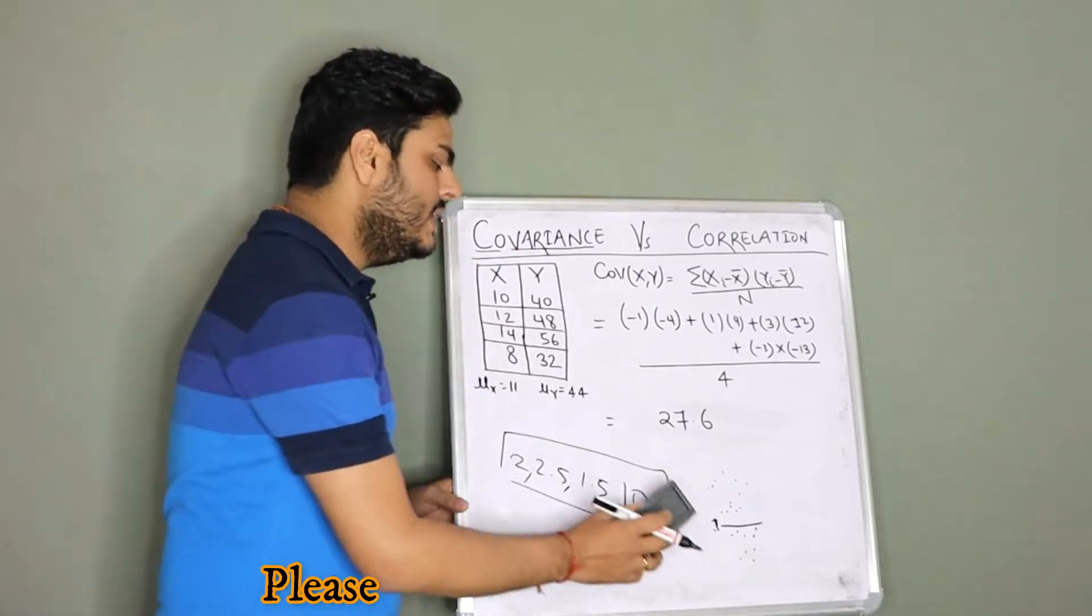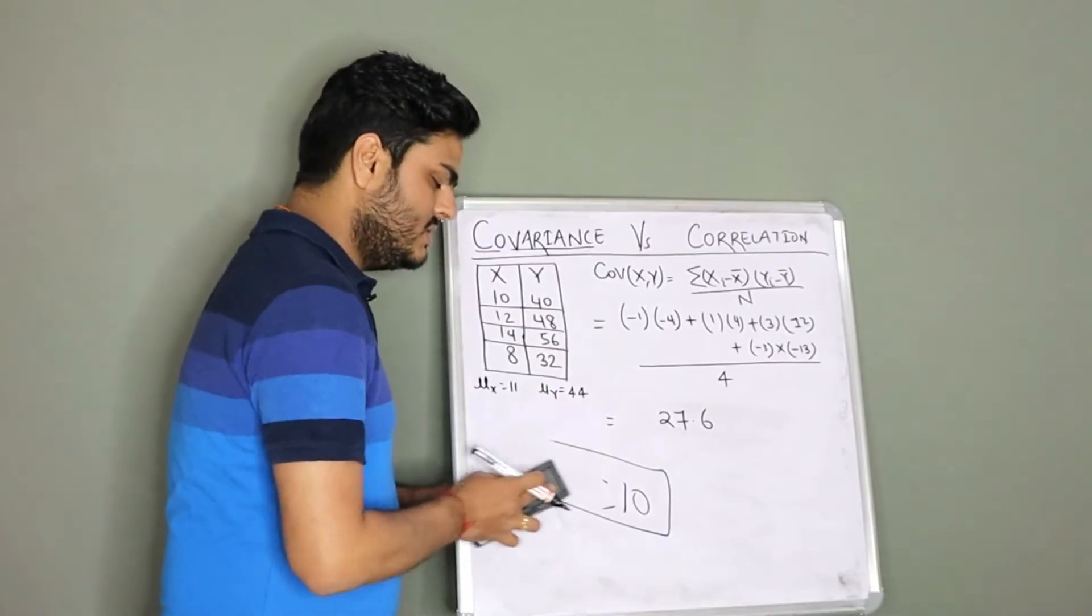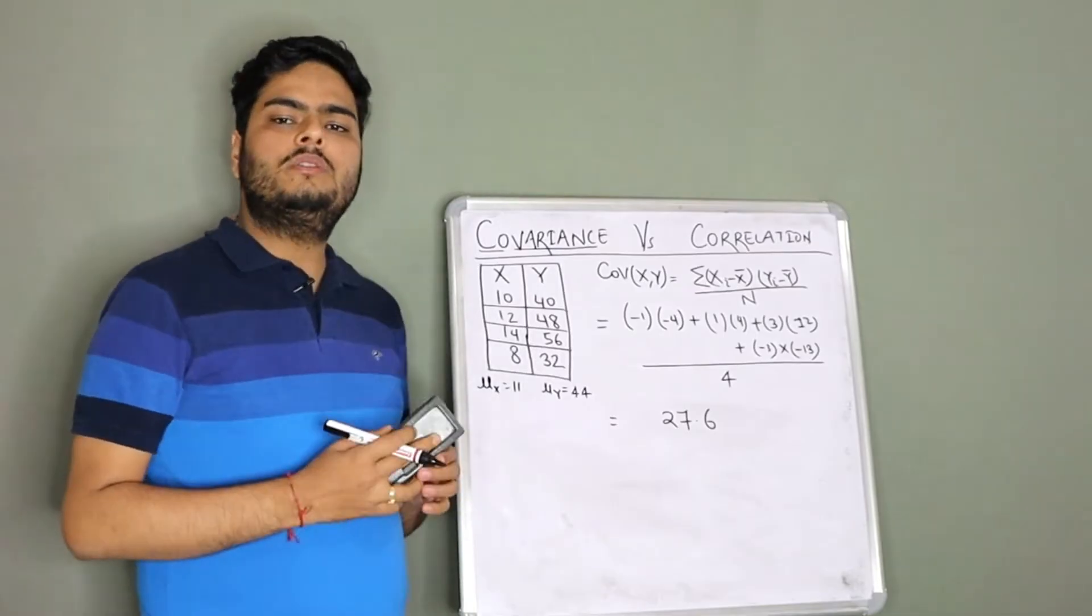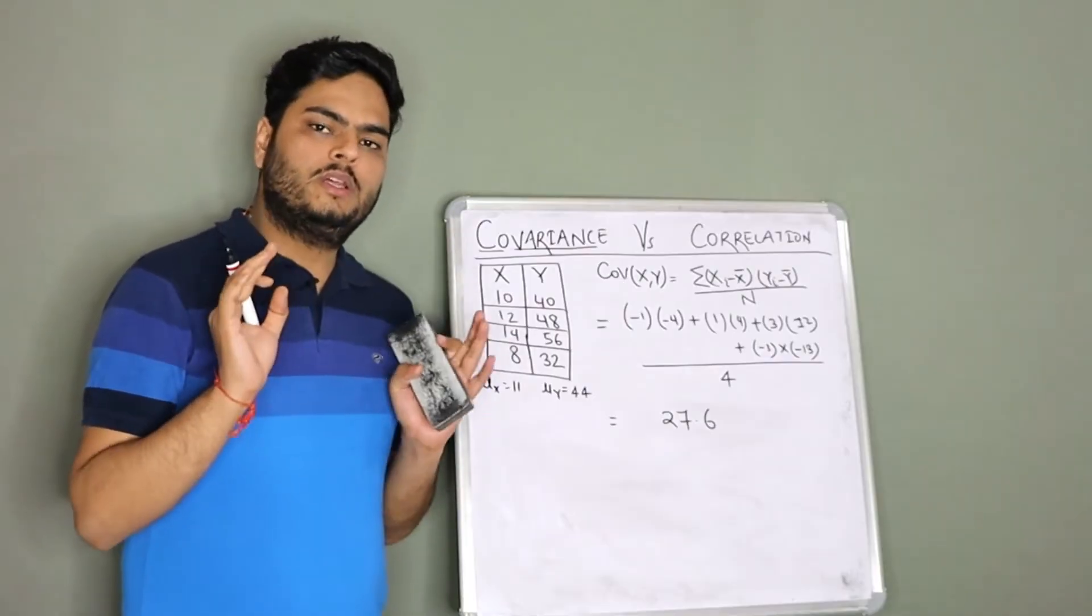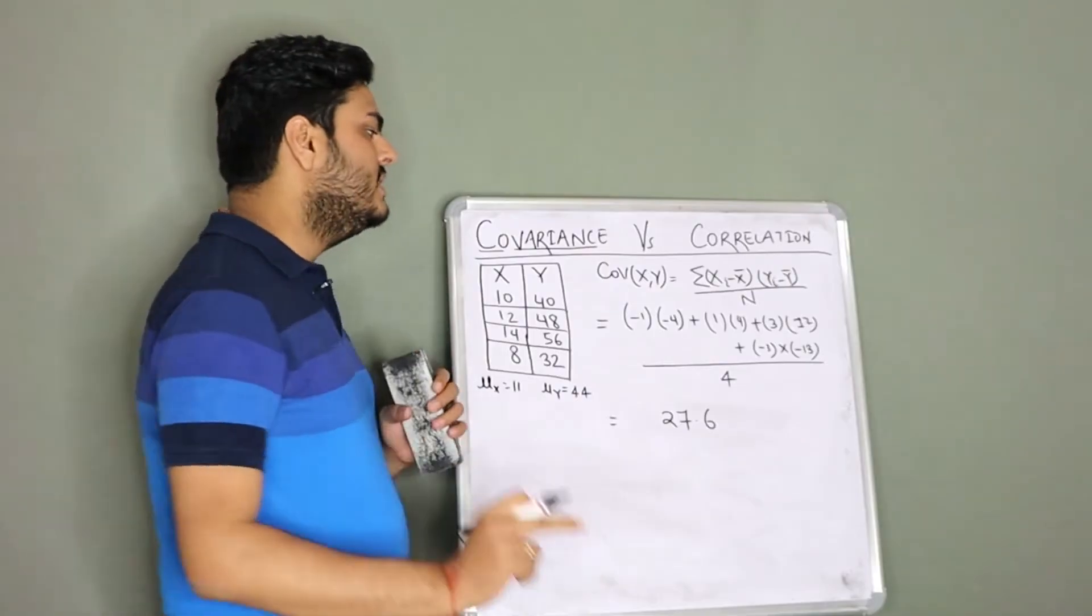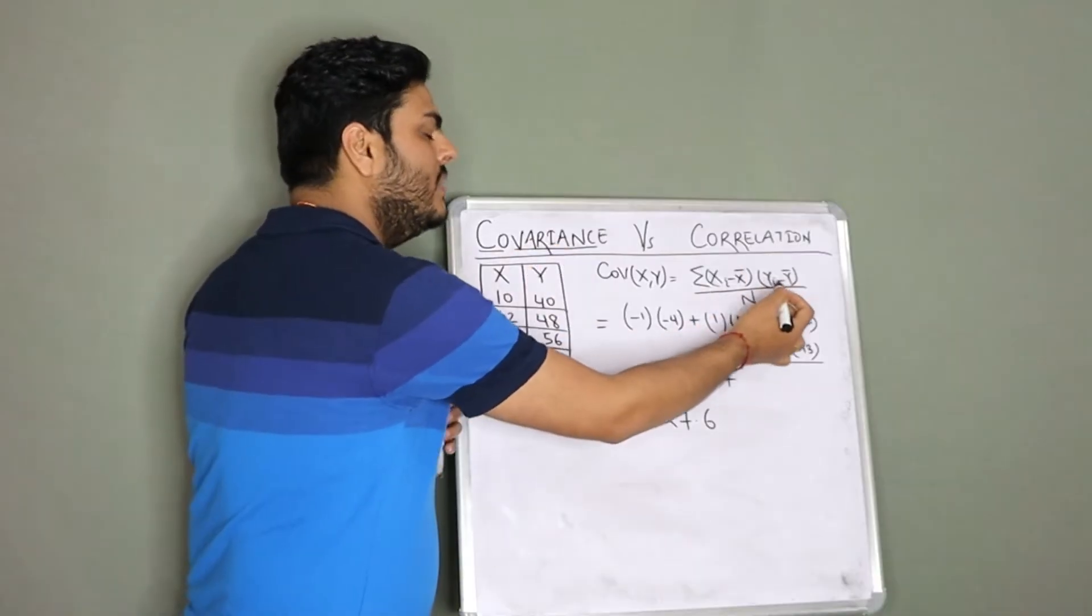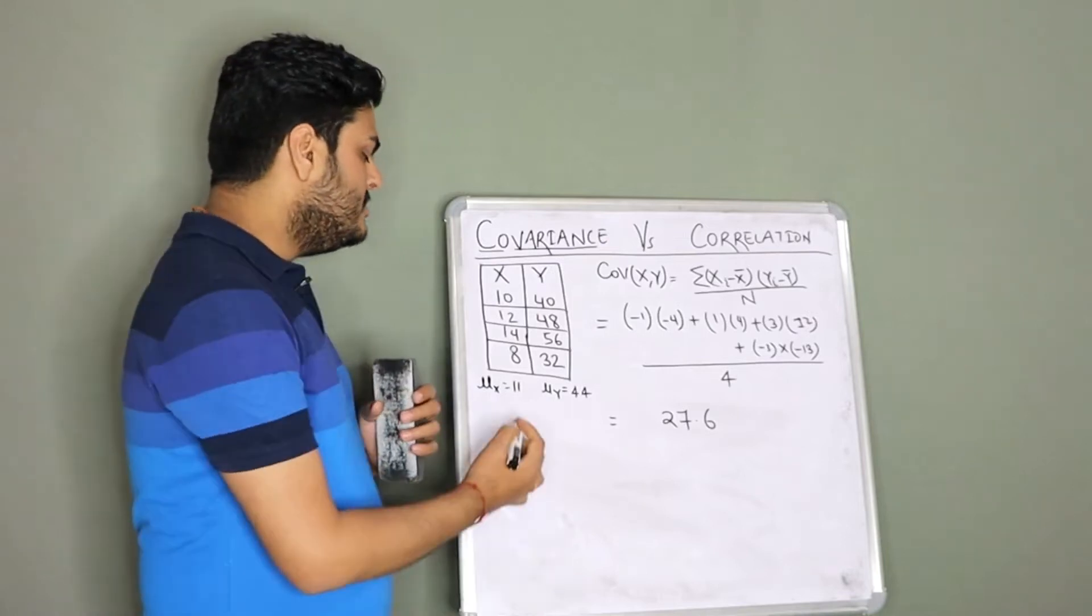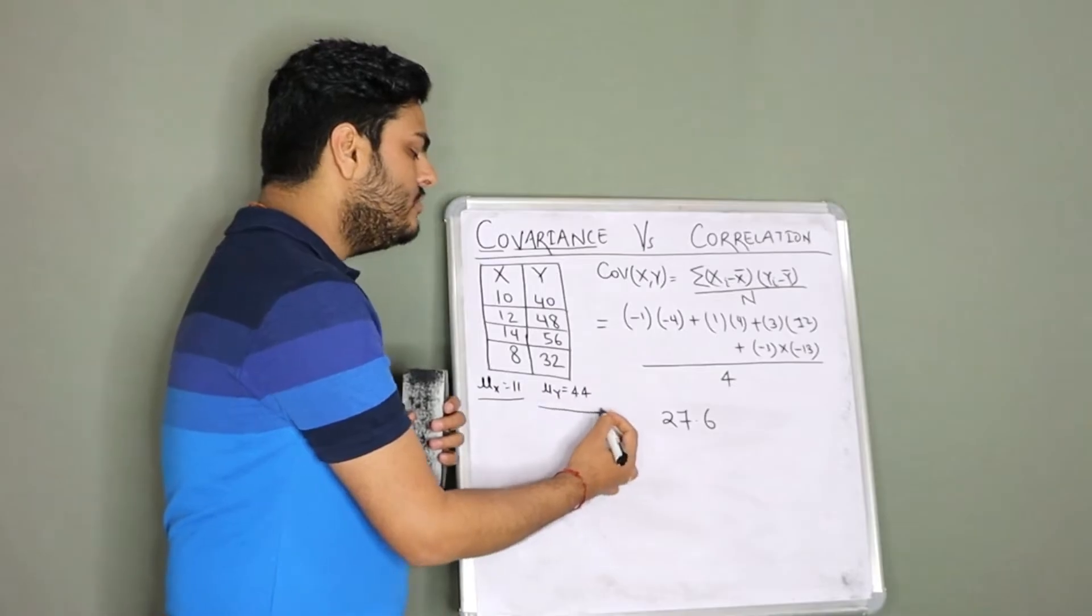Now, here what we are trying to do is we are trying to measure the variance of two variables together. Why I told you the internet sometimes confuses you is because they will write 'measures how two variables vary together.' Fine, but we will understand with an example. By definition, covariance is xi minus x bar, x bar standing for mean of x, multiplied by yi minus y bar, y bar standing for mean of y. What is mean of x? I have taken two variables here x and y. Mean of x is 11 and mean of y is 44.